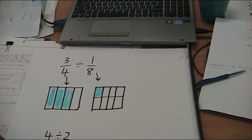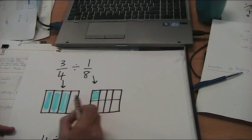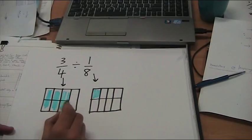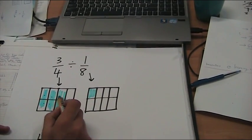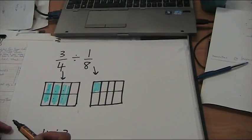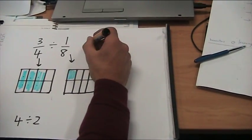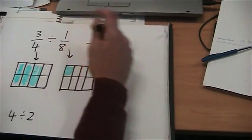So the question's saying, how many of these can I fit into here? And if we were to just go like that, it looks like we can fit 6. But how do you do it when you're doing it just using the numbers?